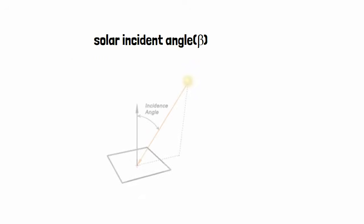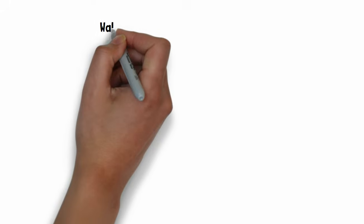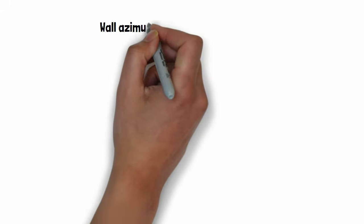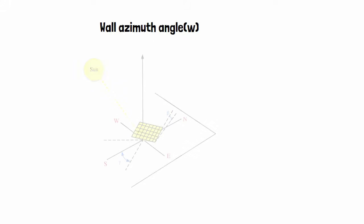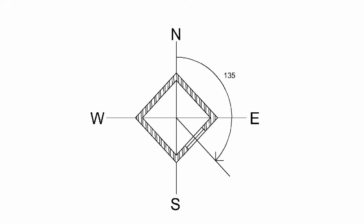Wall azimuth angle is the angle of the wall position of the building, denoted by W. For example, if your house is oriented towards the southeast, the wall azimuth angle will be 135 degrees.